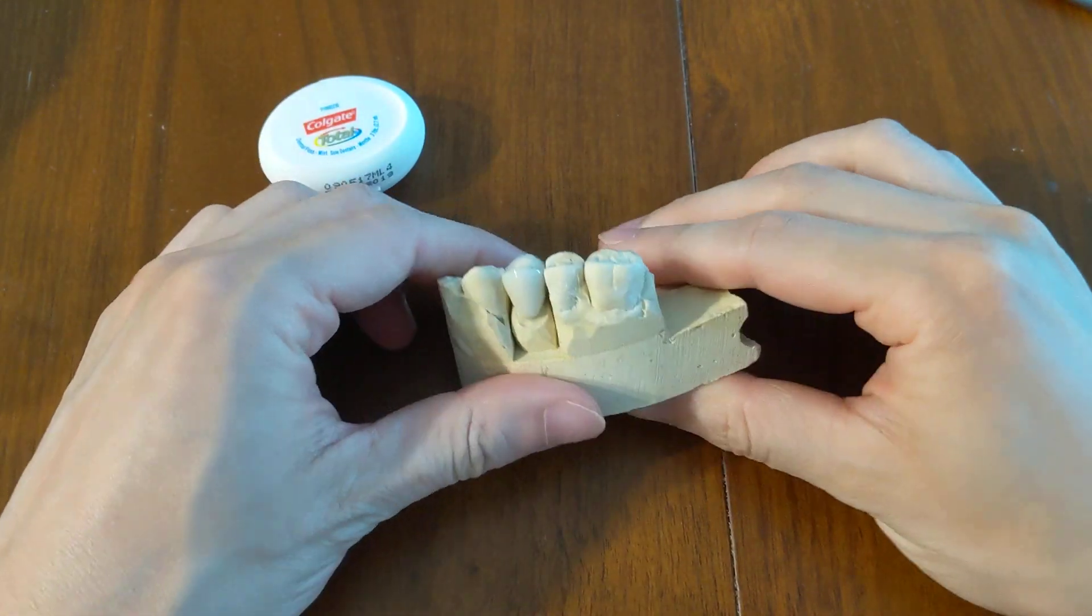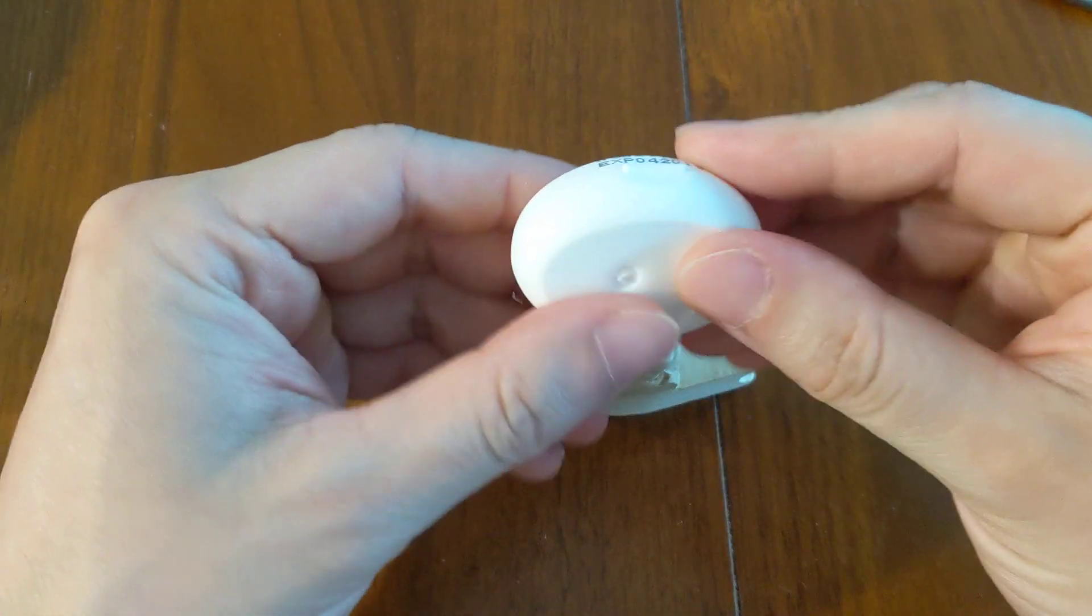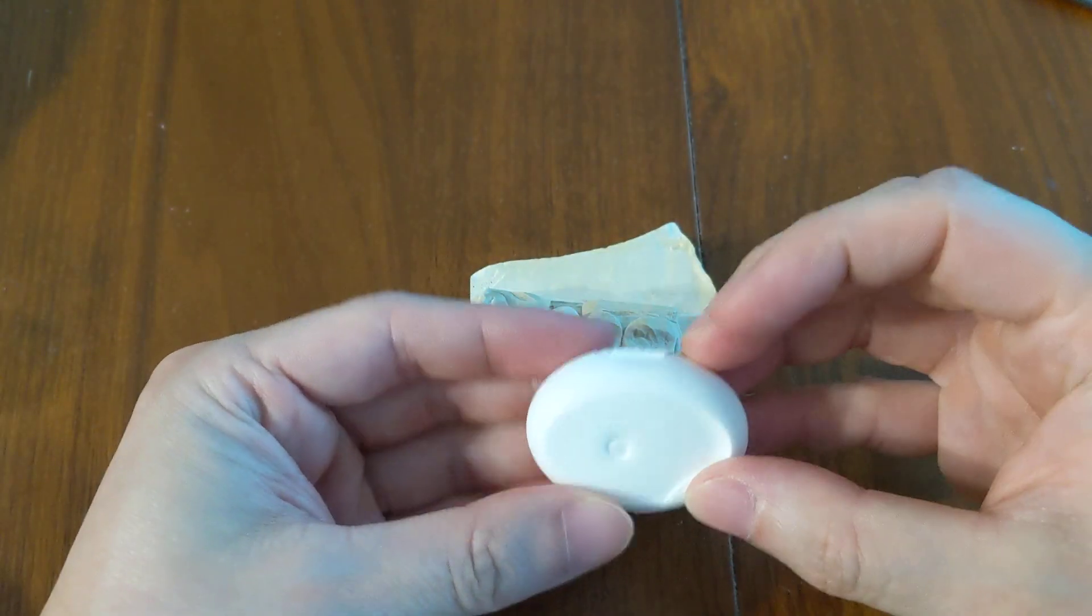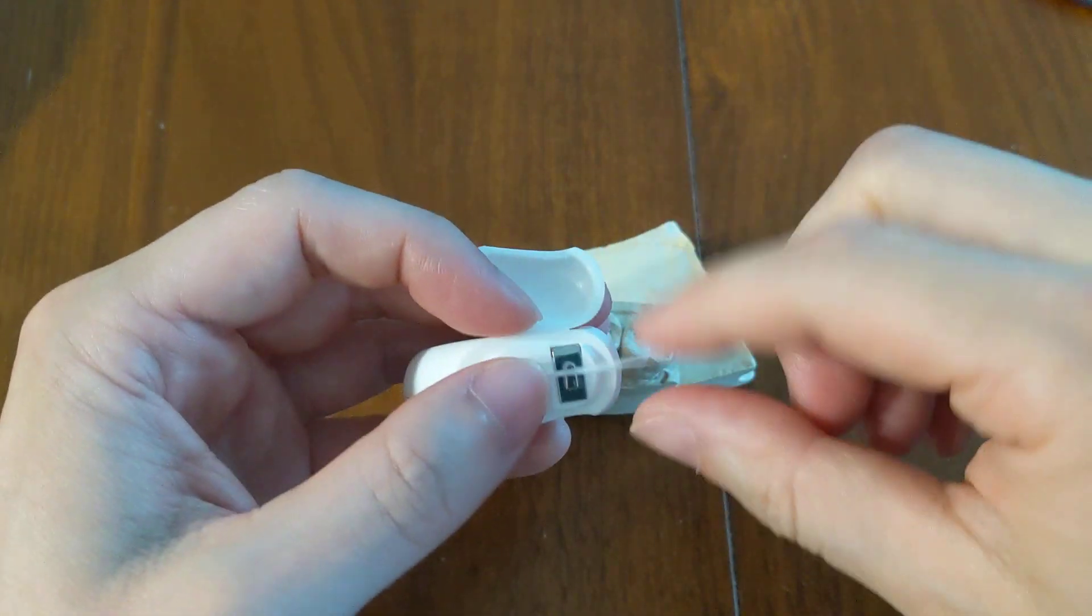I'm going to show you how you're supposed to floss when you have a temporary crown on. There's the right way to do it and also the wrong way. If you do it the wrong way, you can pop the temporary off and that creates a lot of problems.